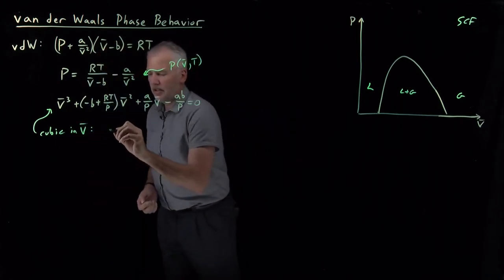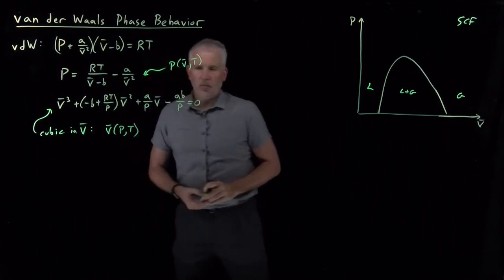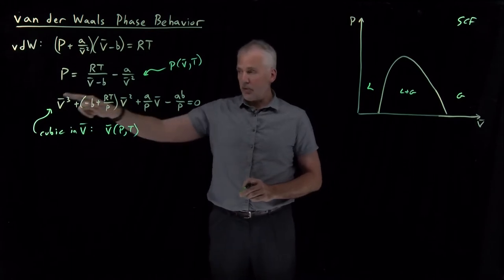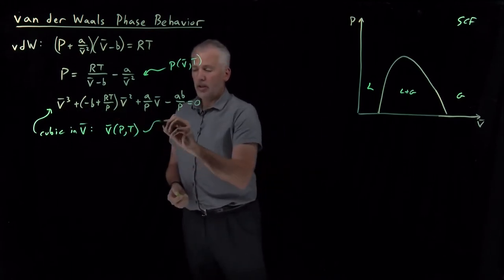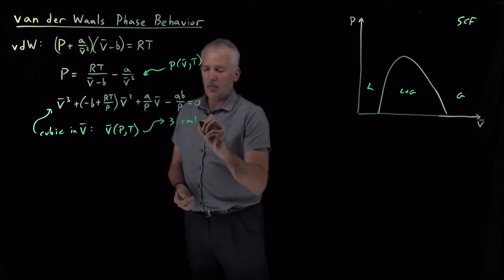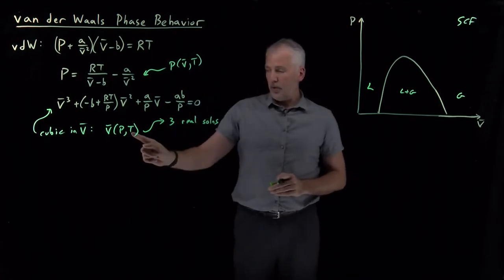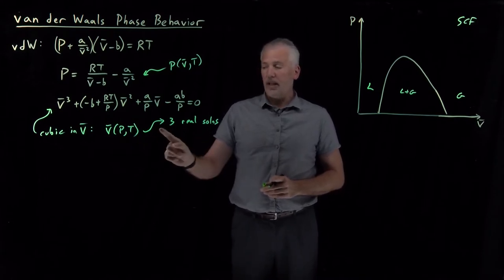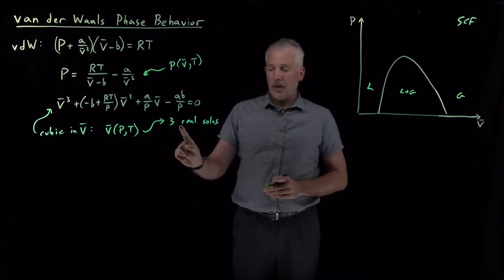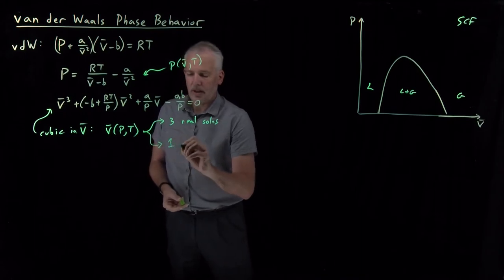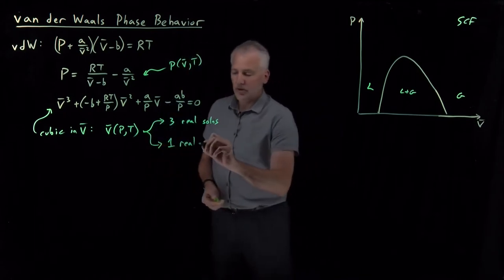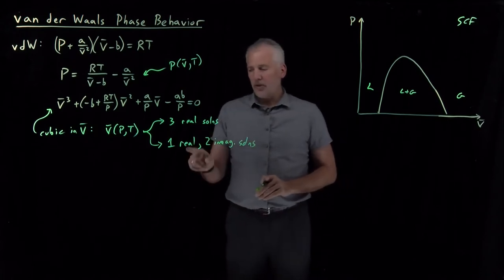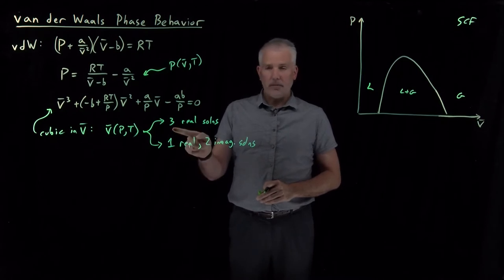If we want to find the molar volume V-bar as a function of P and T, we must solve this cubic equation. A cubic equation has three roots, so sometimes — given a pressure and a temperature — you can find three different values of the molar volume that satisfy those conditions equally well. Sometimes there are three real solutions, and sometimes, as you remember from algebra, there is only one real solution along with a pair of imaginary solutions.